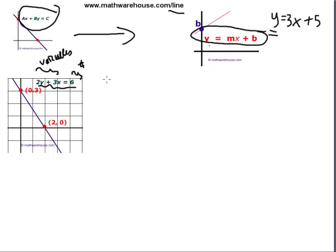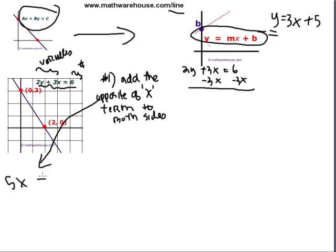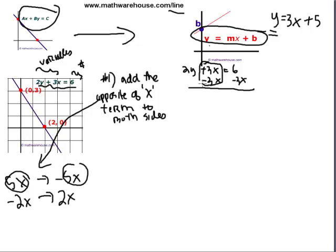Step number one will be to add the opposite of the x term to both sides. So if we had 2y plus 3x equals 6, the opposite of 3x is negative 3x, and we add it to both sides because it's an equation. Just a little vocab reminder: the opposite of 5x would be negative 5x; the opposite of negative 2x would be 2x. You simply take the expression and switch the sign.